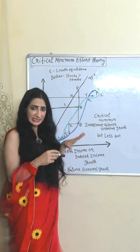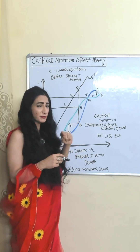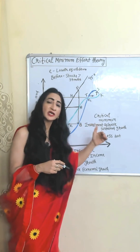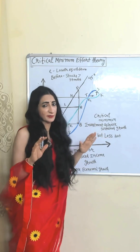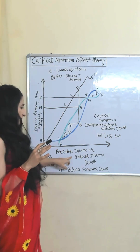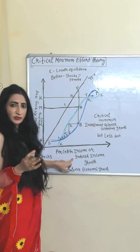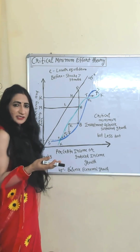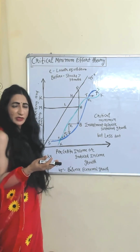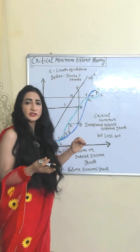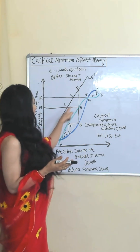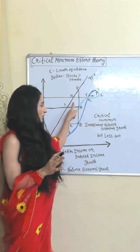Investment less than the critical minimum will not give sustained growth, but investment equal to the critical minimum will definitely give sustained growth. Per capita income — the induced income growth — involves income-raising and income-depressing forces, that means shocks and stimulants. Shocks are income-depressing forces; stimulants are income-raising forces. This 45-degree line shows balanced economic growth.